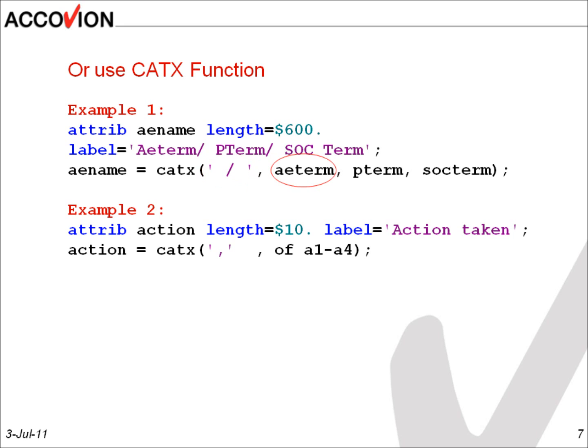In our example, these are AE term, preferred term and SOC term. CATX performs all of our necessary steps and this in only one line of code. It removes leading and trailing blanks, it concatenates non-empty strings and it also includes a separator.